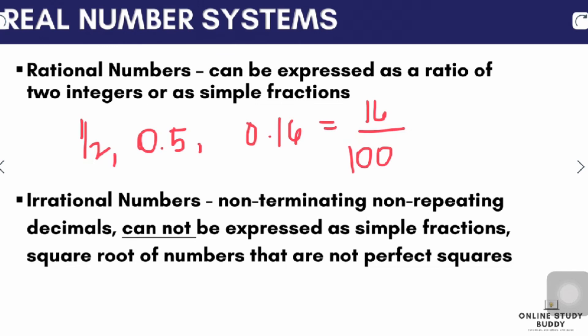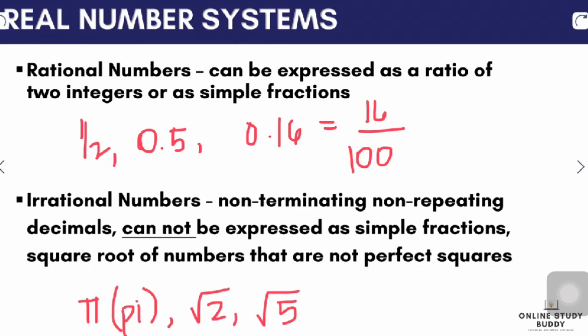Counting numbers are also rational numbers because they can have a denominator of 1. Next are irrational numbers. Irrational numbers are defined as non-terminating, non-repeating decimals — those that cannot be expressed as simple fractions, or square roots of numbers that are not perfect squares. For example, pi is an irrational number because it is non-terminating and non-repeating and cannot be expressed as a fraction. Also, the square root of 2 and the square root of 5 are examples of irrational numbers.